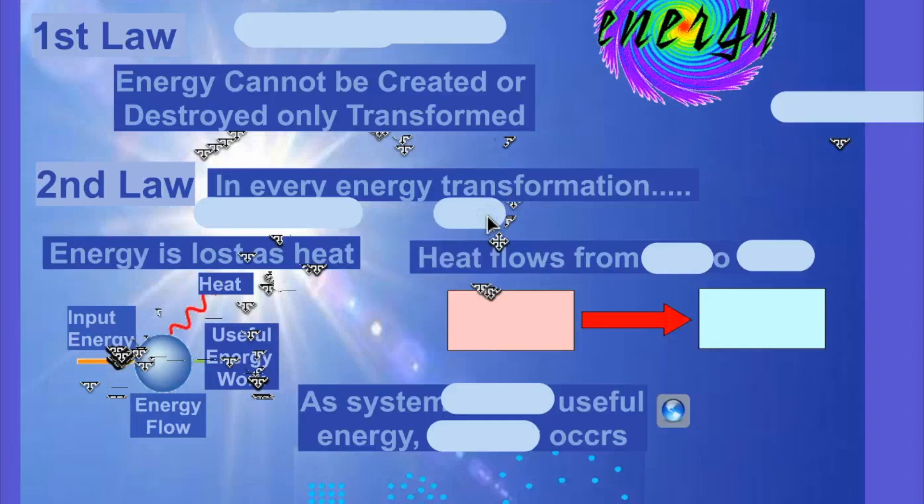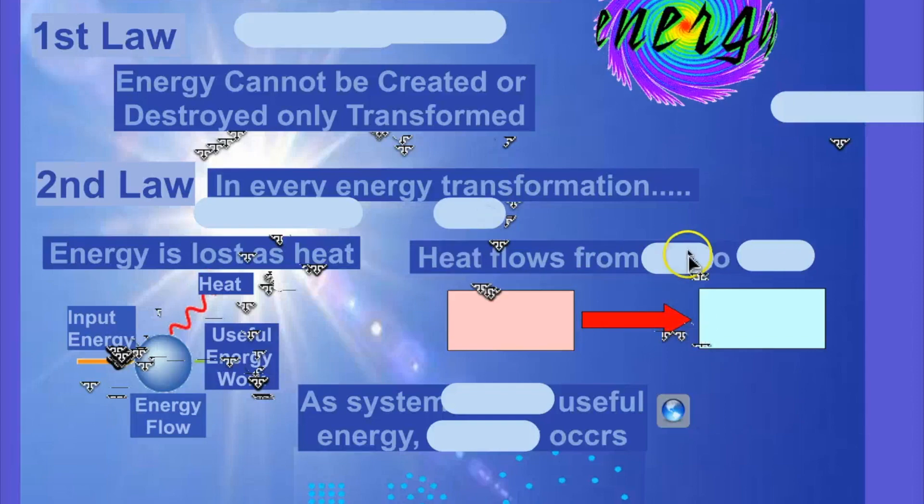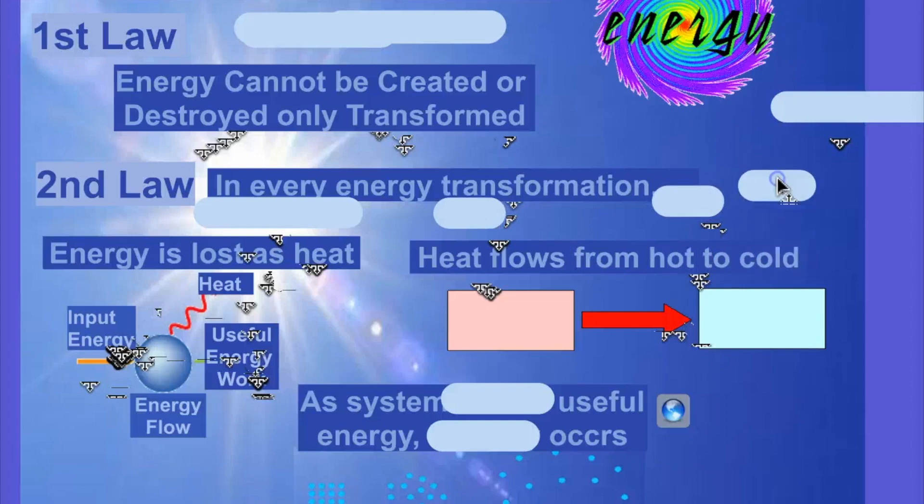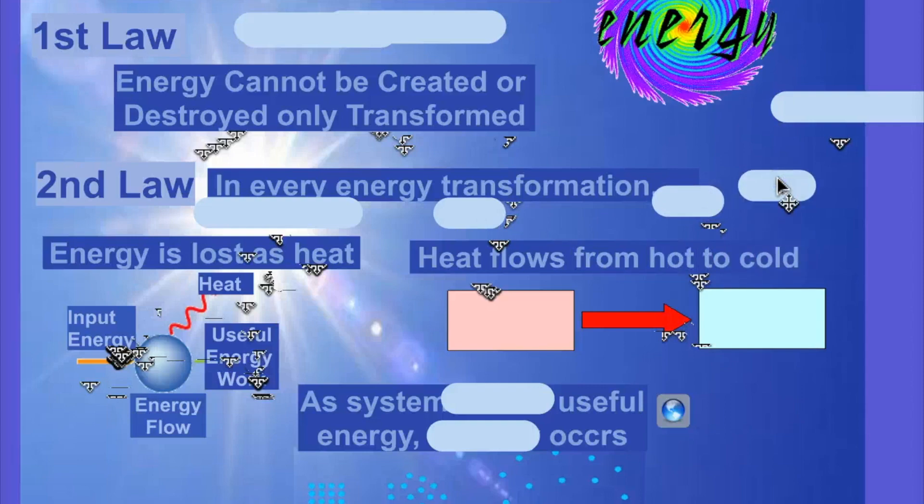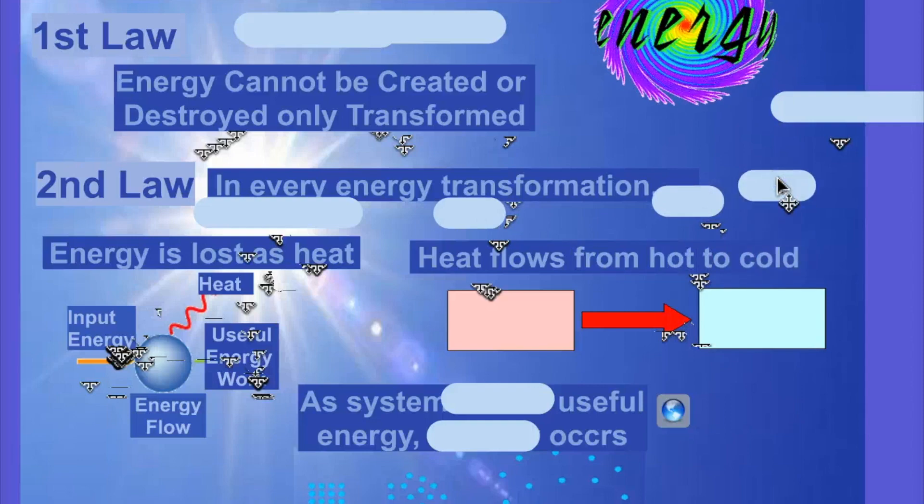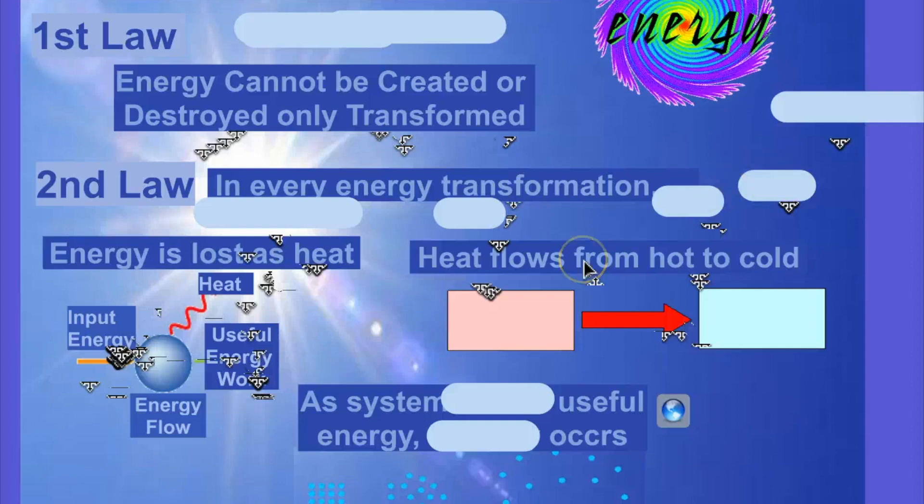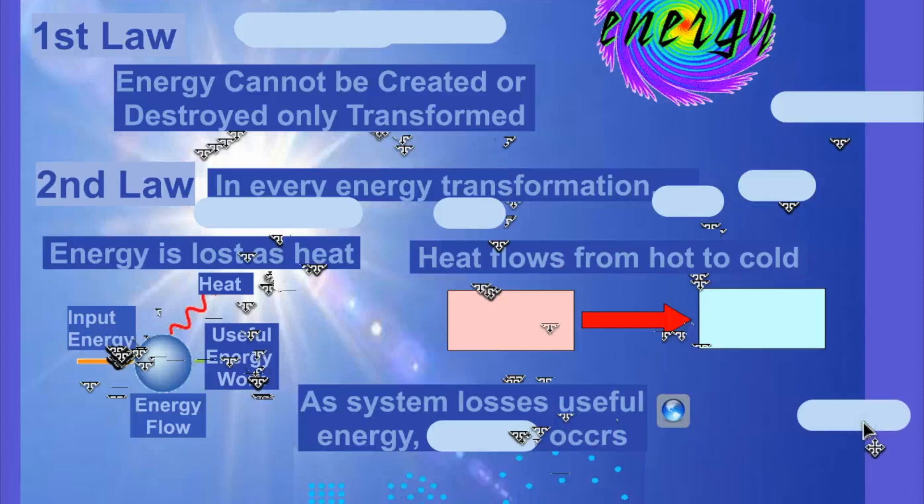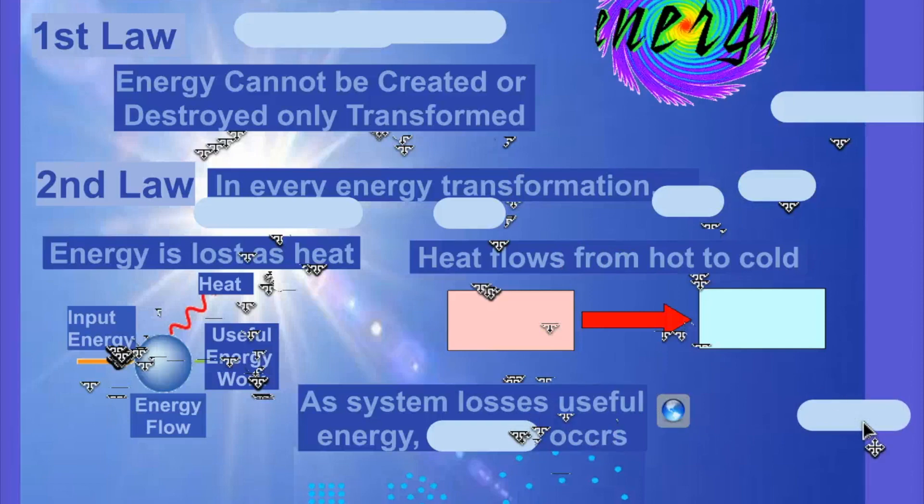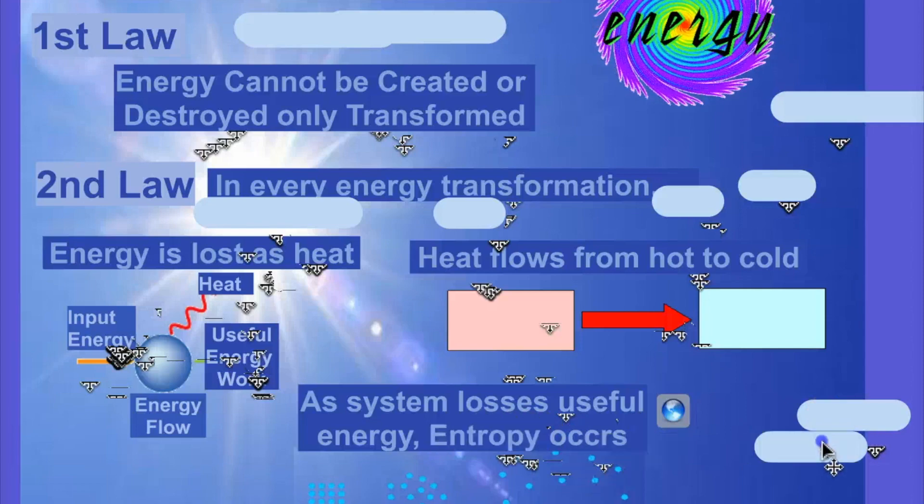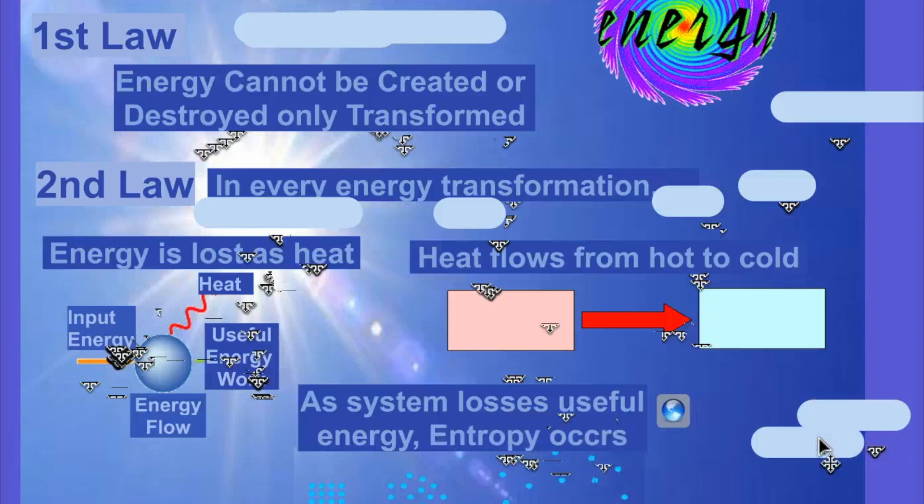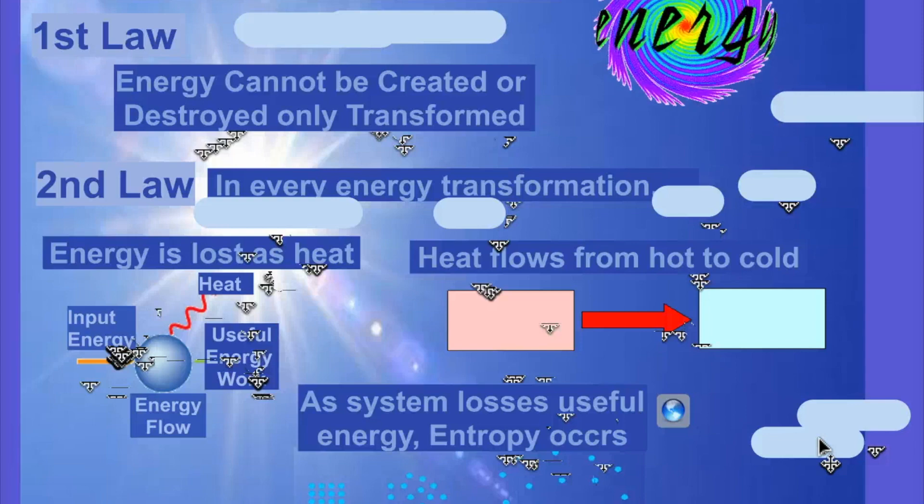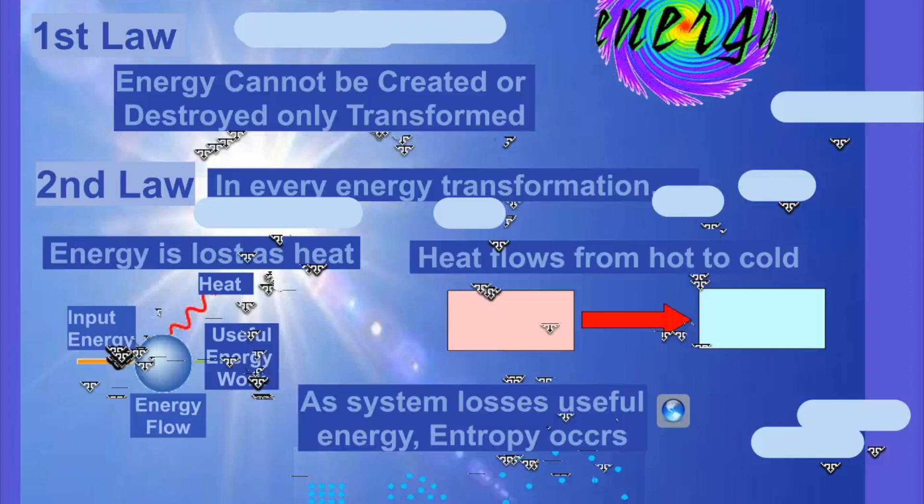Whenever heat flows, it flows from hot to cold. That's the second sentence. Heat flows from hot to cold. And as the flow of energy takes place, that system is going to create entropy, which is molecules are going to get dispersed. And that's kind of explaining why it loses its high quality energy and becomes dispersed energy, which is low quality energy.